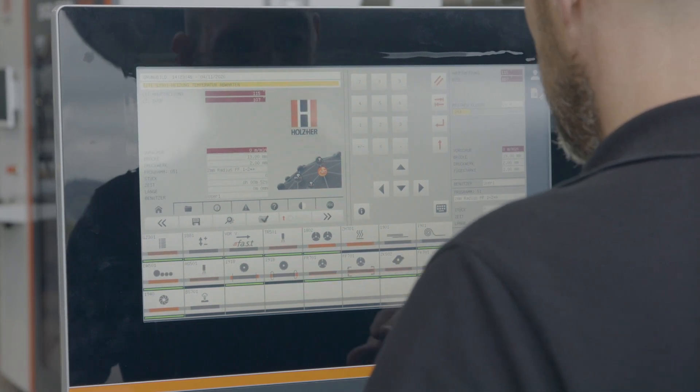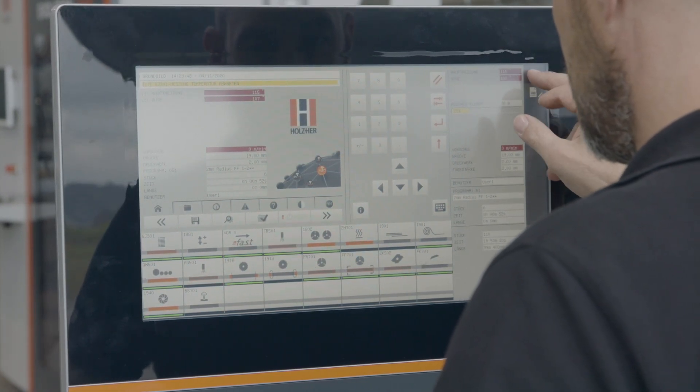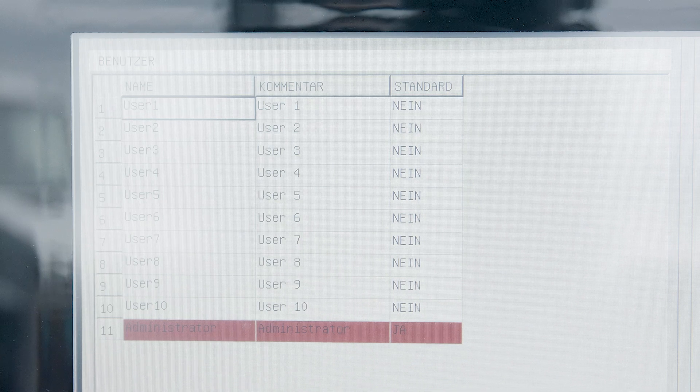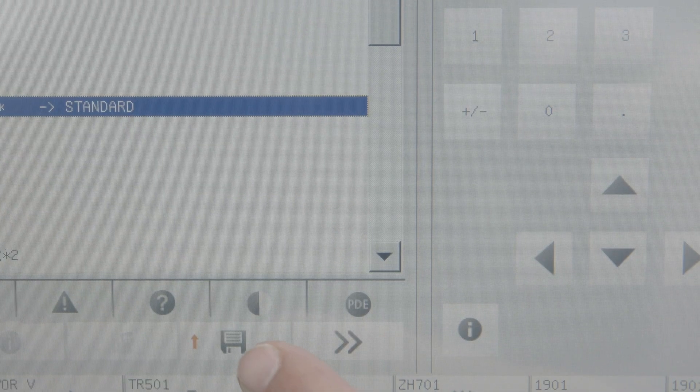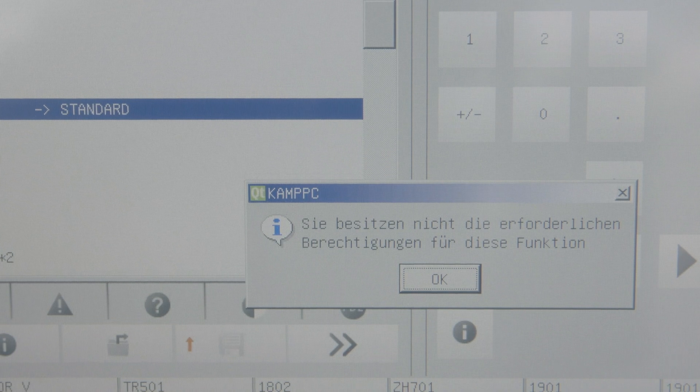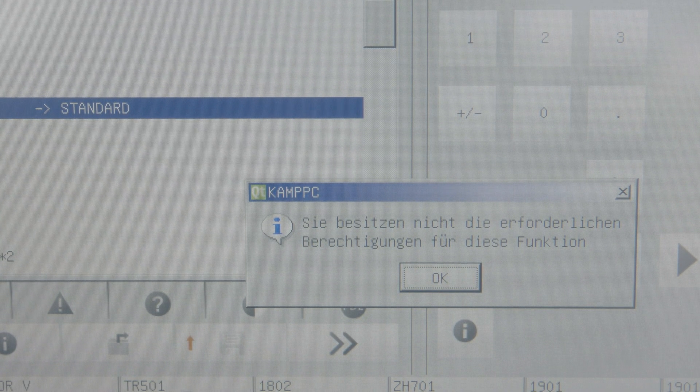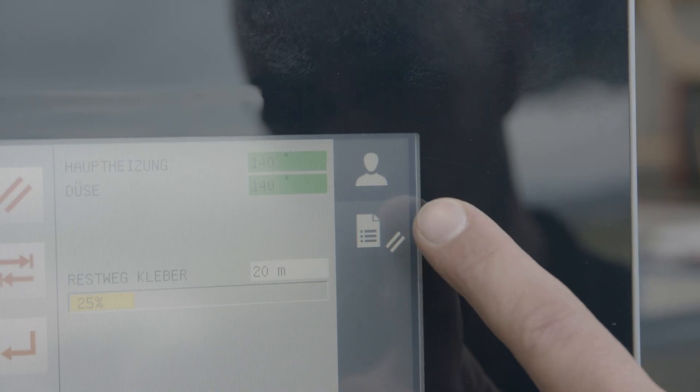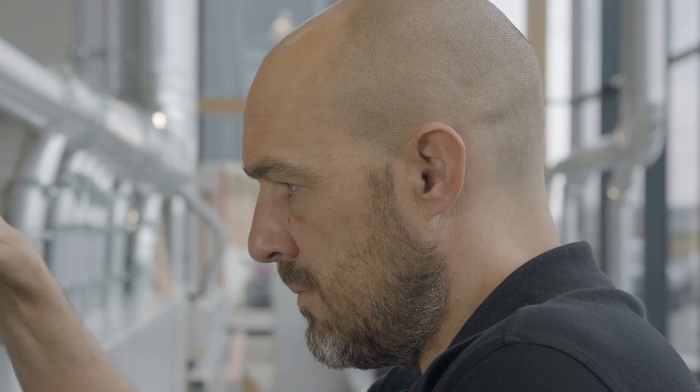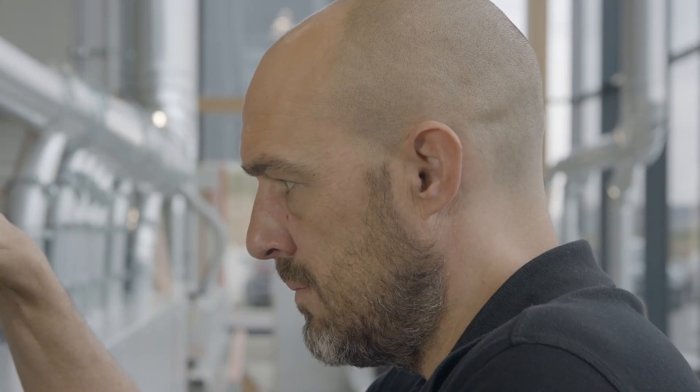An individual user administration with password protection and single authorizations can be set up for your needs. For example, the apprentice can use all programs but has no authorization to change them, while you, as the administrator, have access to the complete operating spectrum.